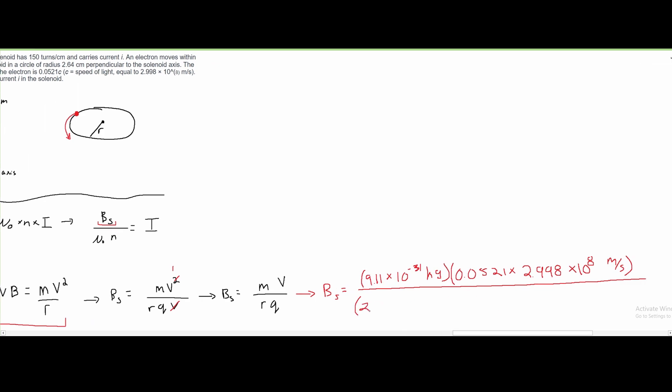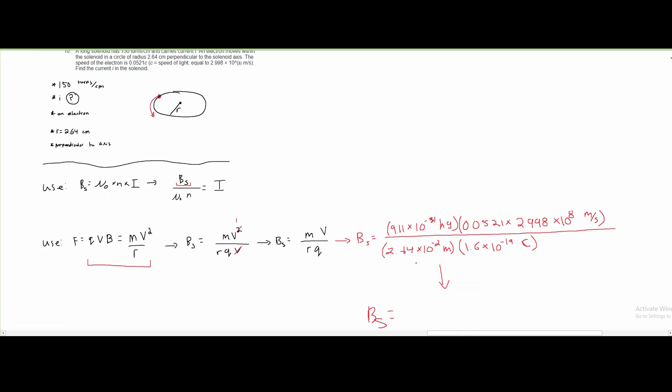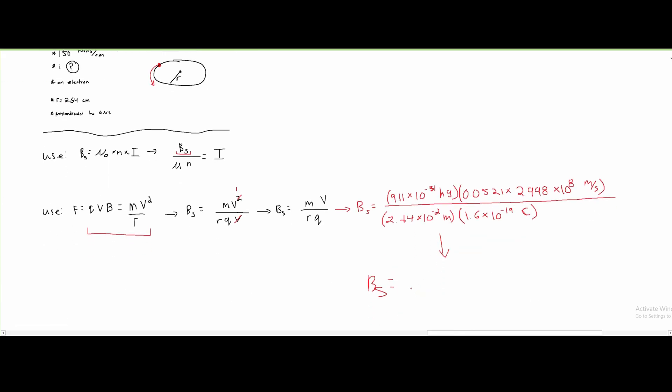And this is being multiplied by the charge of an electron, and we know the charge of an electron to be 1.6 times 10 to the 19th coulombs. And we are going to get that our Bs is approximately equal to 3.35 times 10 to the negative 3 teslas. That is our B.